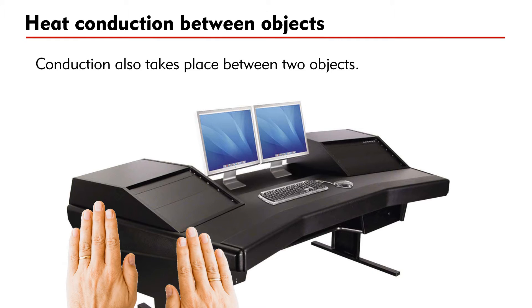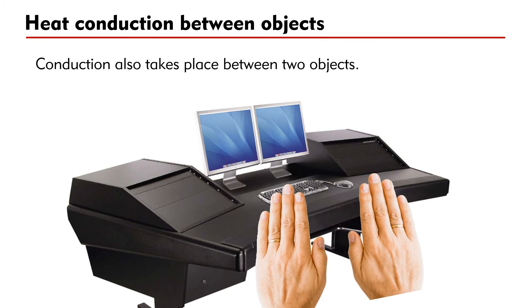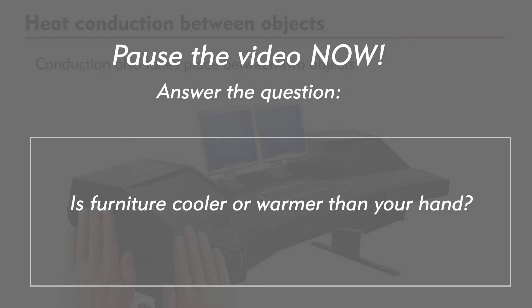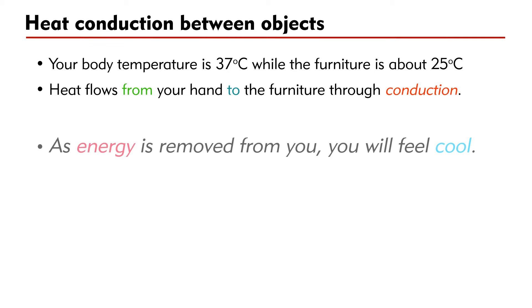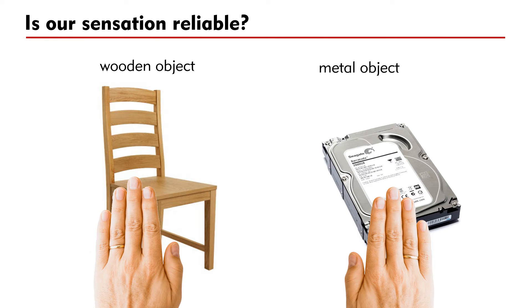Now let's try a simple activity. Touch any furniture around you with your hands. Do you think the furniture is cooler or warmer than your hand? Pause the video for a while and answer the question. Since your body temperature is 37 degrees Celsius, while the furniture is at room temperature of about 25 degrees Celsius, heat flows from your hands to the furniture through conduction. As energy is removed from you, you will feel cool. Is our sensation reliable?